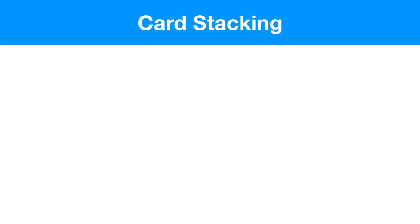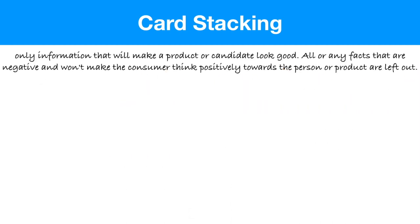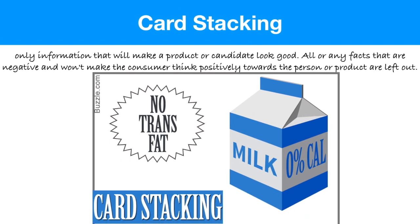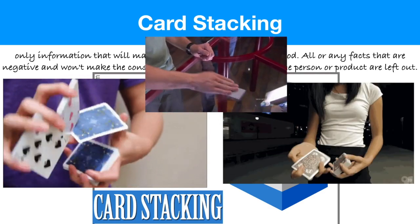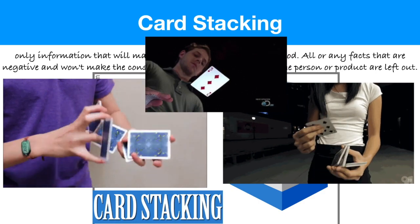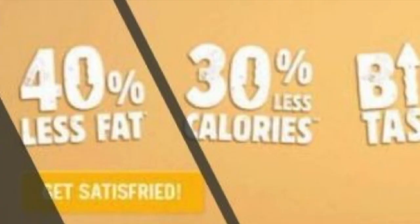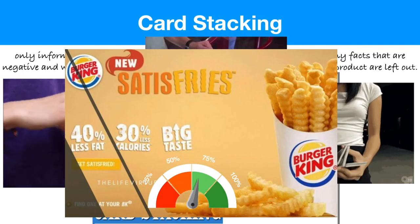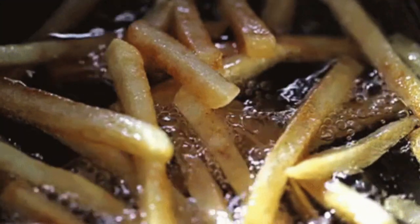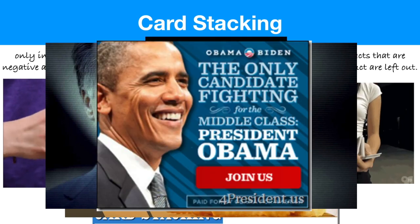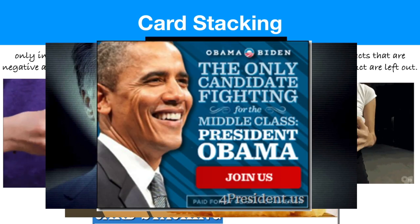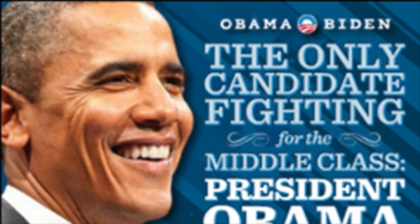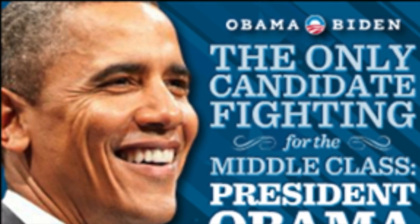The final technique is called card stacking — simply stacking the deck. You use information that makes you look good and omit information that would make you look bad. It's like stacking a card game so you never lose. We can see Burger King fries that look much healthier by these statistics, which influences people, but there's no way frying things in oil makes them healthy. When politicians use this technique, they focus only on aspects that make them look good or their opponents look bad — like 'Obama's the only candidate fighting for the middle class,' implying the other candidates don't care about the middle class.